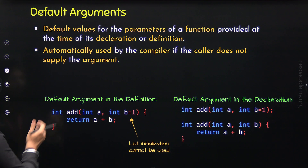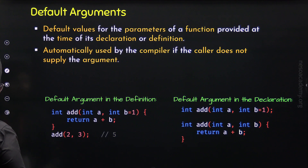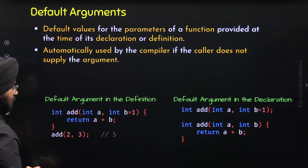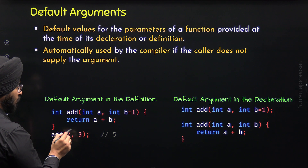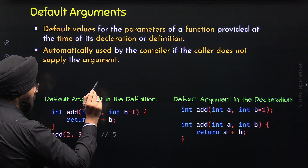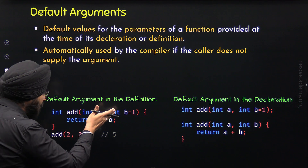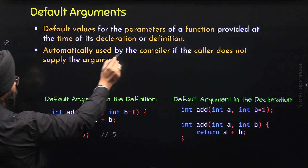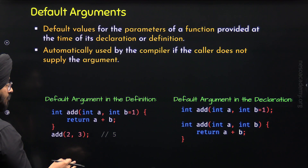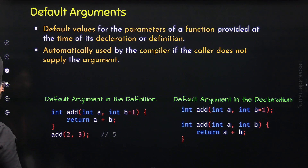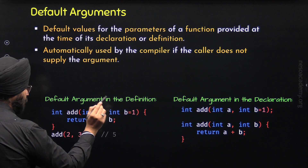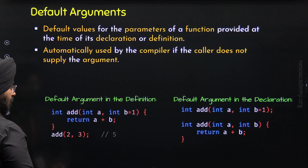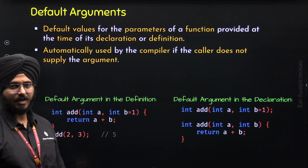Now let's see how to call these types of functions. Here I have called the add function with two arguments, 2 and 3. These arguments will be received by these parameters. Please note that parameter b will receive value 3, not 1, because parameter b will receive the default argument only when we do not provide the argument to parameter b from the caller. But here the caller has supplied the argument to parameter b, therefore b will receive value 3. So the value of a is 2 and b is 3, and we will get the result 5 from this function.